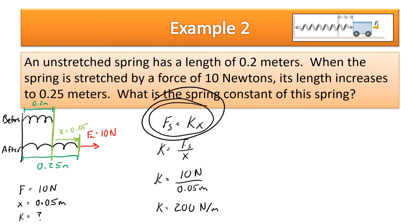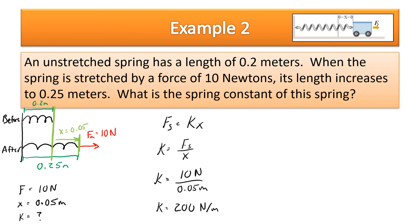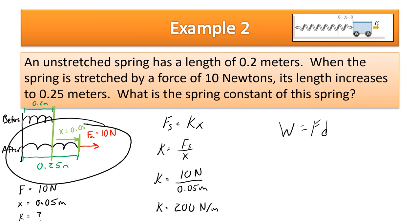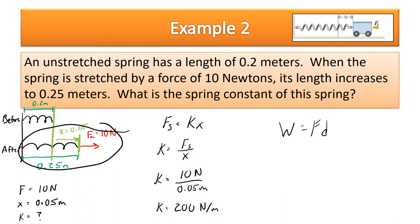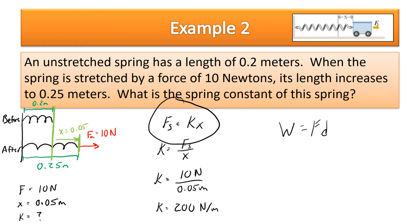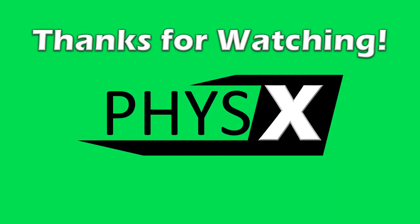Now that we know how to handle the varying spring force using Hooke's Law, in the next lesson we'll revisit W = Fd. The work done stretching a spring equals the elastic potential energy stored in the spring. When released, that elastic potential energy converts to kinetic energy. That's where the elastic potential energy formula comes from — and that's it for this lesson. Thanks for watching and have a great day!